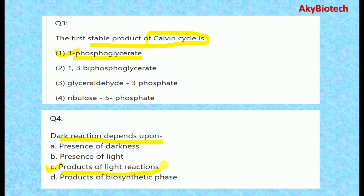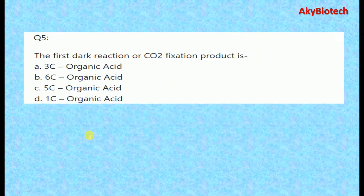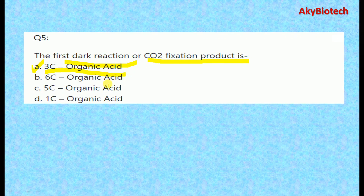Question four: Dark reactions depend upon the products of the light reactions. Question five: The first dark reaction or carbon dioxide fixation product is a three-carbon compound — a three-carbon organic acid.